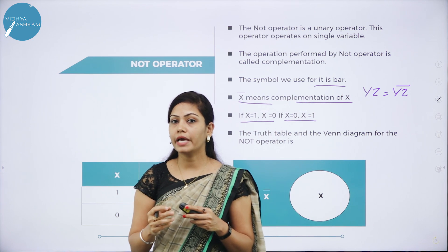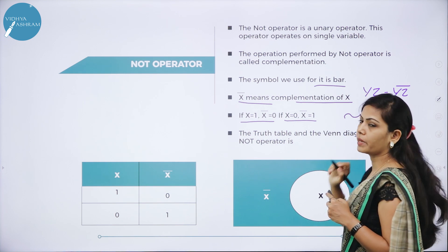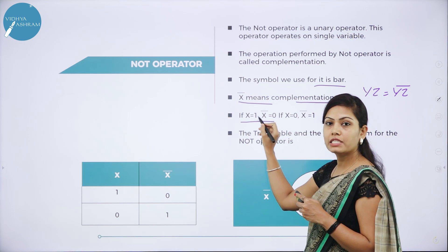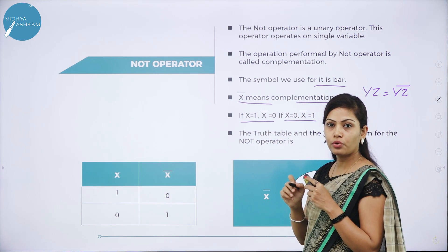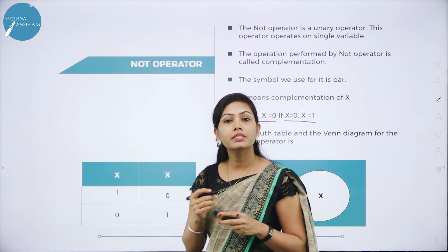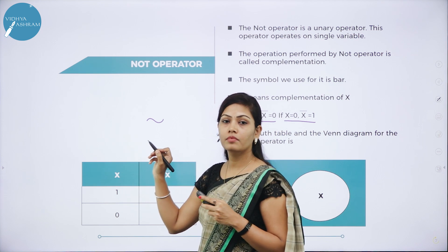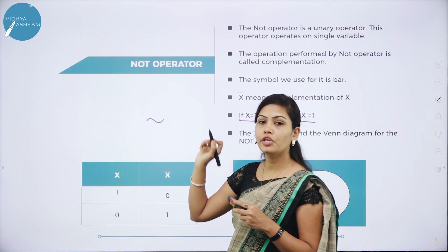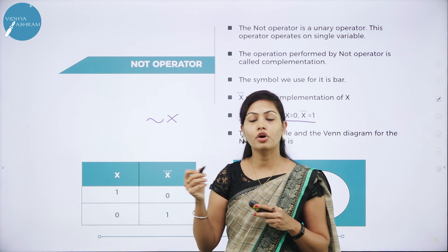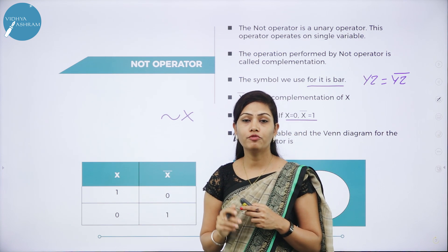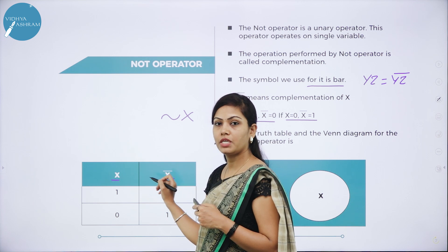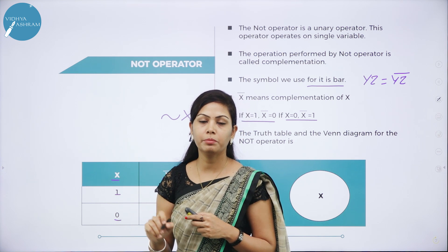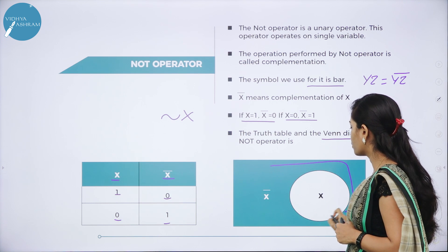Several other symbols like negation are also used for the complementation operation. If negation is used, then negation of x is called the negation or complement of x. The truth table for the NOT operator shows x and x-bar as columns: 1 changes to 0 and 0 changes to 1. This is the truth table of the NOT operator.